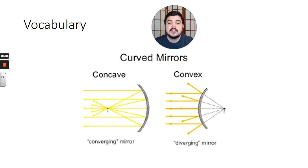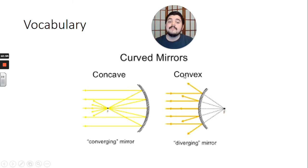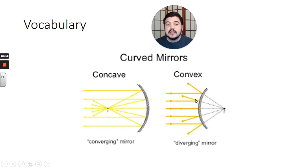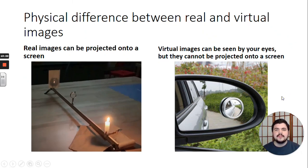Some vocabulary: the converging mirror from our first example is also called a concave mirror — to remember it, think that the mirror caves in, so it's concave. The convex mirror is the diverging mirror from our last example where the light rays spread out. I remember convex because it's the one that's not concave. You may also hear me use the words converging and diverging mirrors.